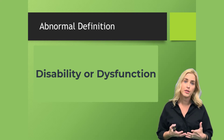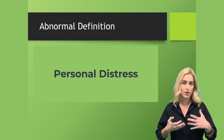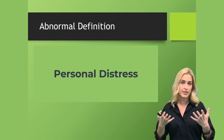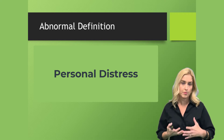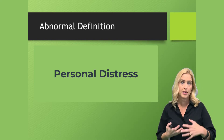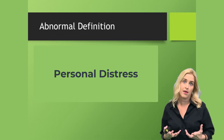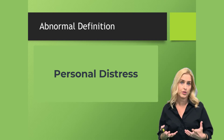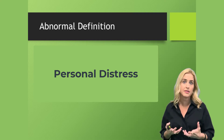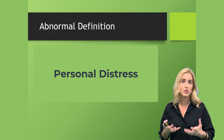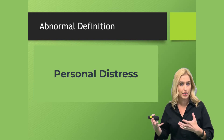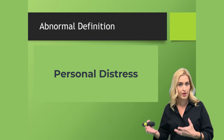Another criteria is personal distress. If someone is having personal distress because of their symptoms, their behavior or mental process, this is another criteria that we use. An example might be someone feeling intense sadness and/or having suicidal thoughts — this is enough in and of itself to get treatment for that individual.